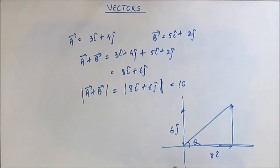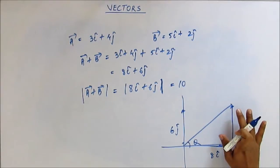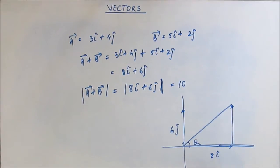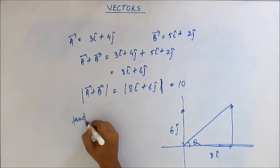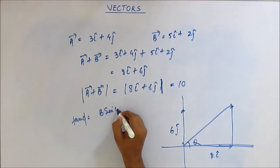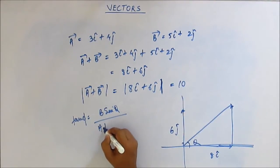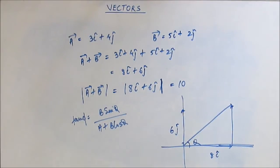We have already studied how to find the angle with one of the component vectors. Suppose this is vector A and this is vector B, and this is the resultant vector. We know the formula for finding the angle of the resultant vector with vector A. If you remember, tan φ is equal to...